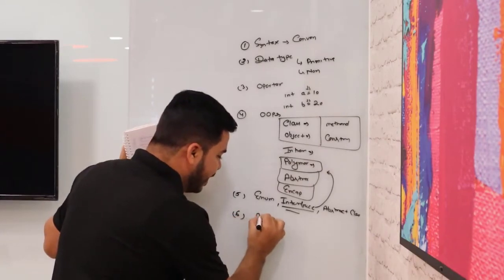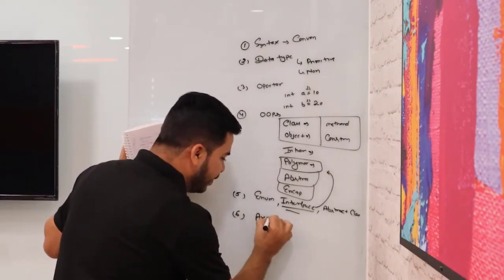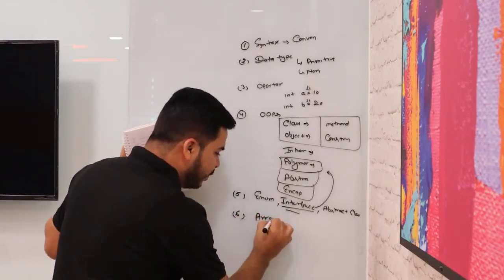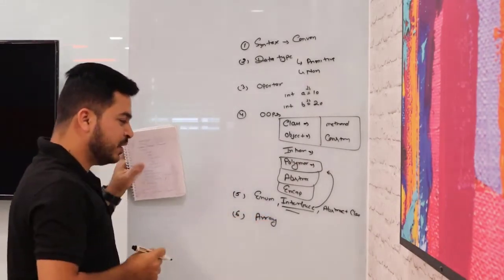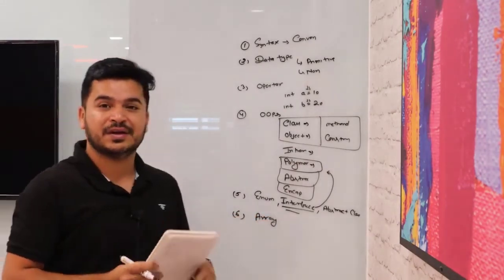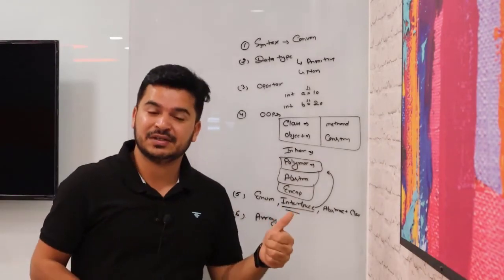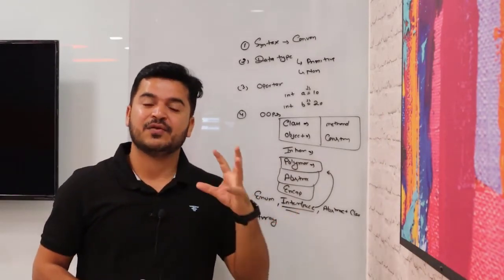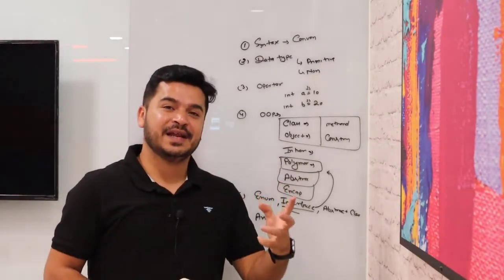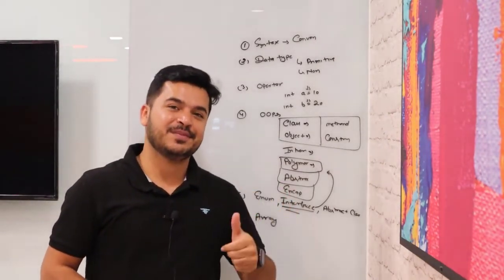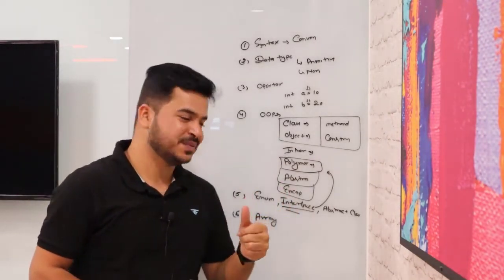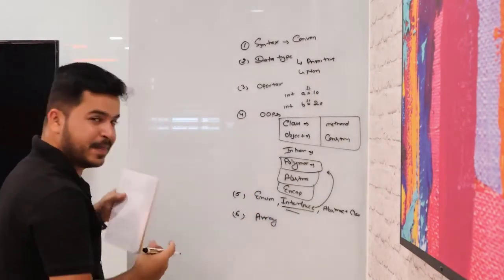Now you can start with arrays — what arrays are, how to use them, and what their advantages and disadvantages are. Once you understand arrays, the main part comes: collections.